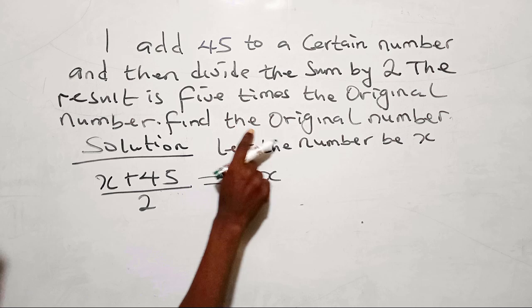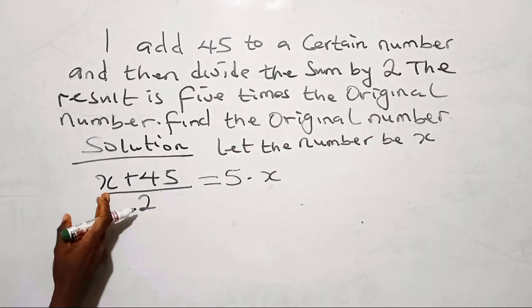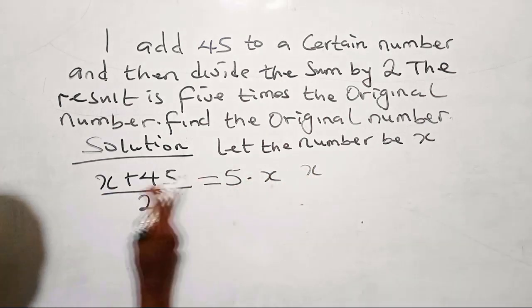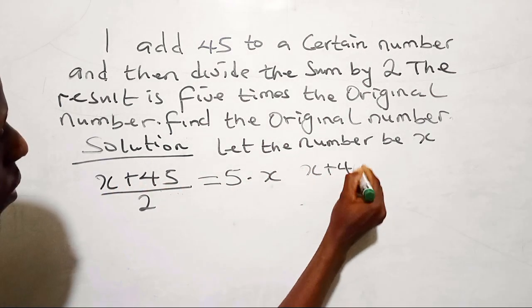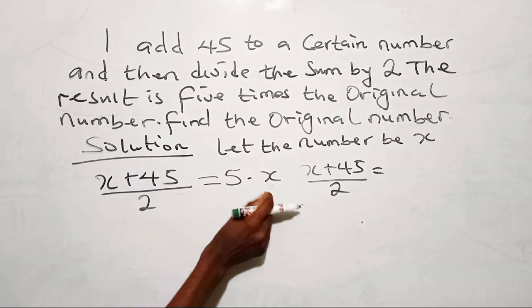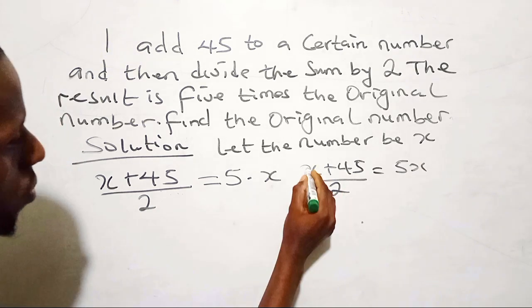So I should find the original number. So I'm still working with x. So here, I can write this as x plus 45 over 2 equals... So by the time you multiply 5 times x, you have 5x.